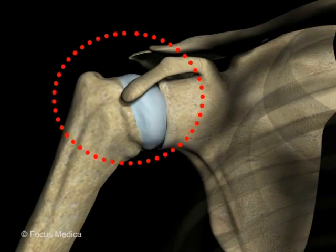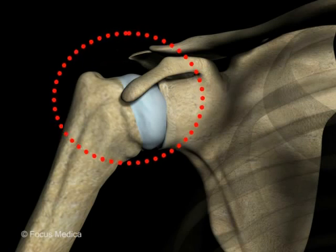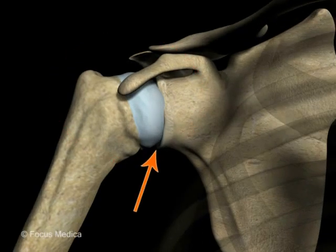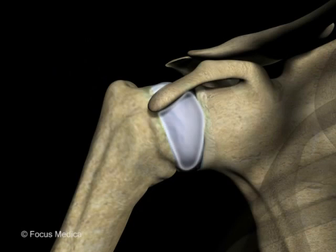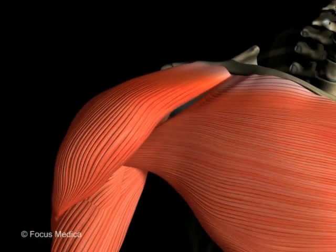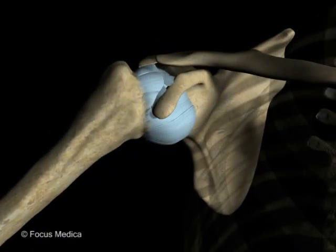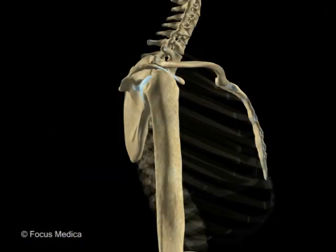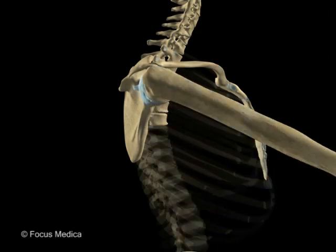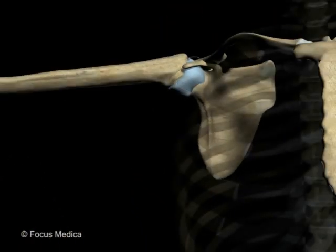The shoulder joint is a synovial ball and socket type of joint formed by the glenoid cavity of the scapula and the head of the humerus. It is surrounded by a fibrous capsule and is stabilized by ligaments, the rotator cuff and other muscles, and the coracoacromial arch. It is a very mobile joint. Movements possible at this joint include flexion, extension, abduction, and adduction.